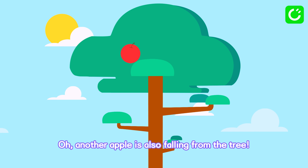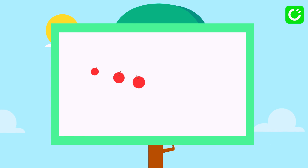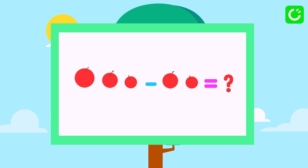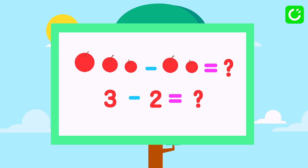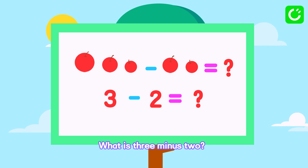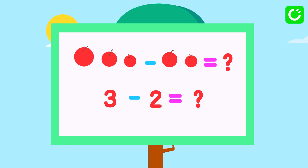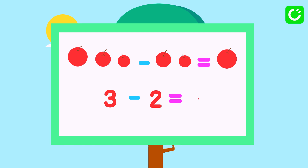Oh, another apple is also falling from the tree. So, how many apples are left? What is three minus two? One. One apple left on the tree. Three minus two equals one.